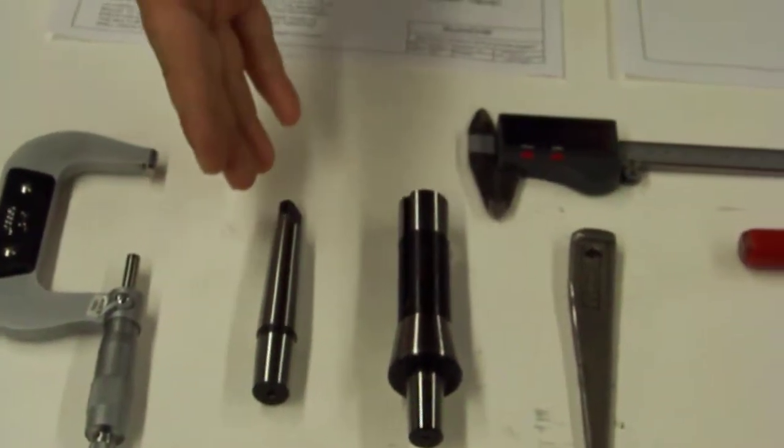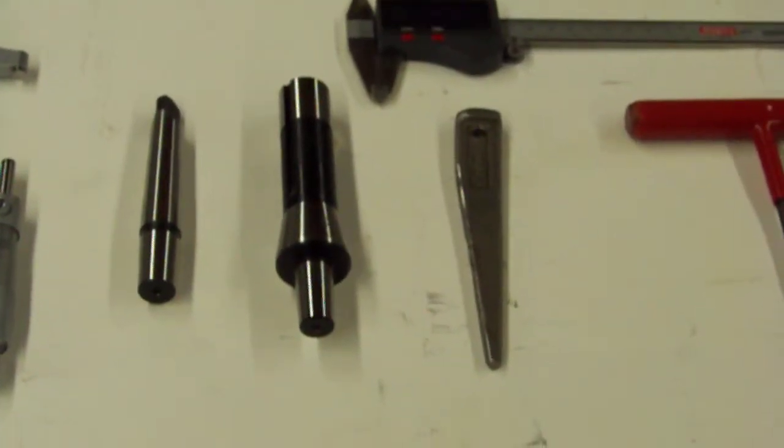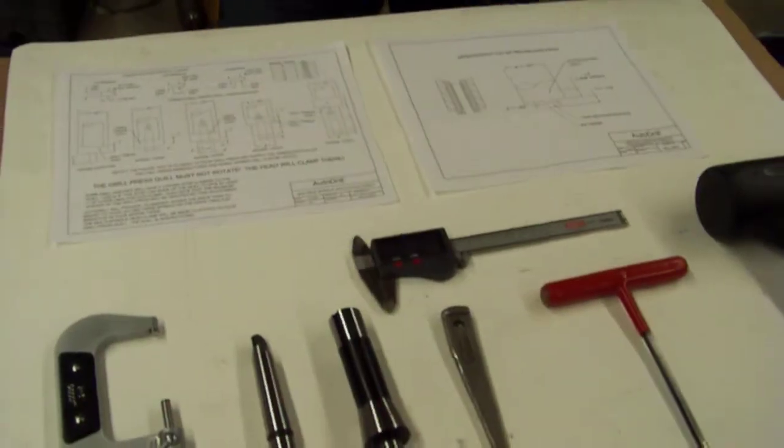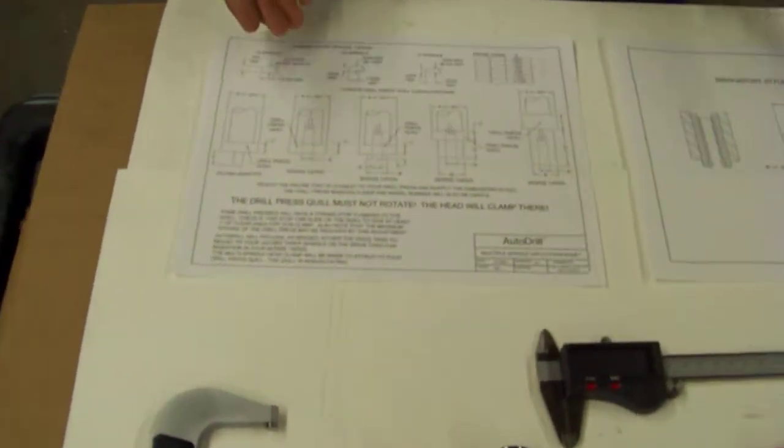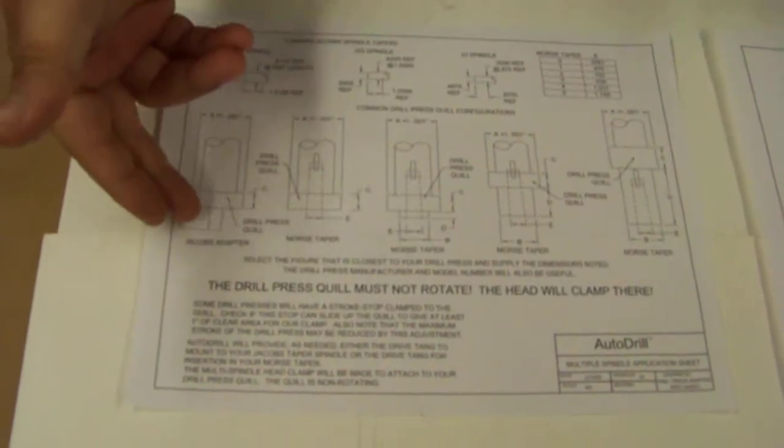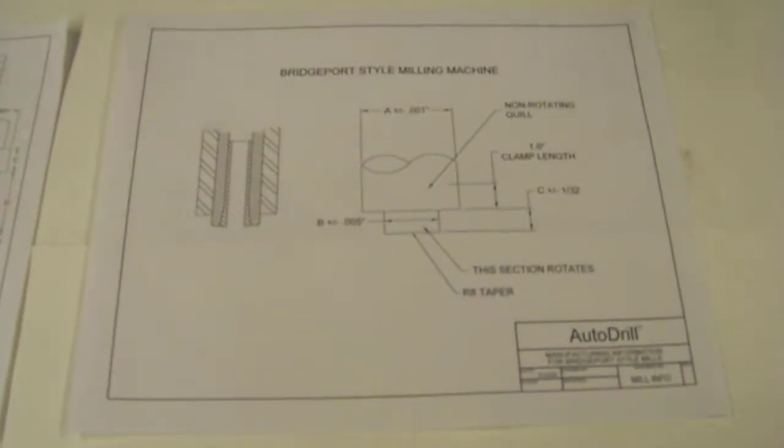You might come across that your machine has a Morse taper or perhaps an RA taper in the event of a bridge port or light type milling machine. You'll need some of these tools in order to get the dimensions. When purchasing a head from Auto Drill, we'll send you one of these PDFs that will show you on a standard drill press you might have a Jacobs taper or a Morse taper, and in the event of a bridge port or light type milling machine, you'll come across an RA taper.